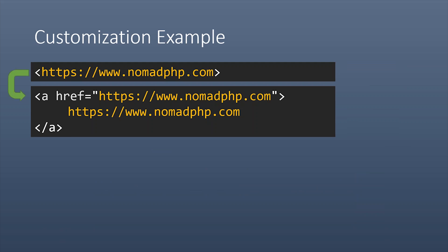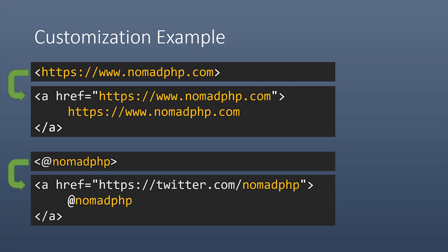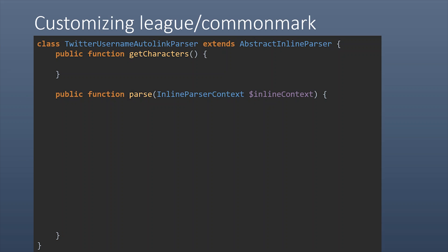Let's go back to our auto-link example. What if we wanted to add similar auto-linking functionality for Twitter handles? For example, take a Twitter handle enclosed with the same less-than and greater-than signs, and automatically convert it into a link to that user's profile page. It's actually pretty straightforward — all you have to do is create one class. Simply create a sub-parser with two methods. The first method tells the main parsing engine what characters you're interested in: whenever you see a less-than sign, call our parse method so we can try to parse this syntax ourselves.